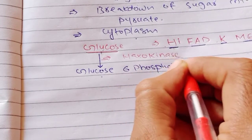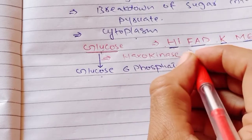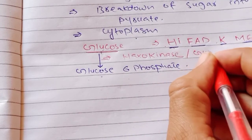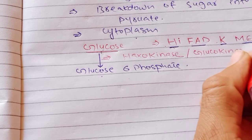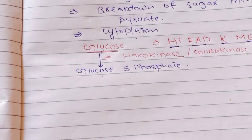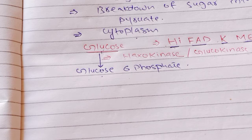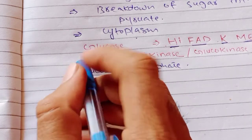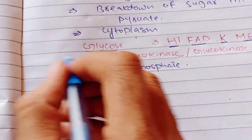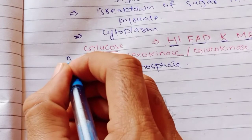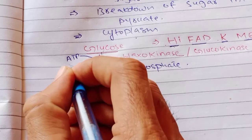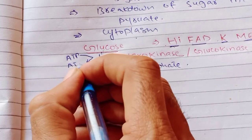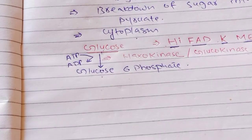Hexokinase is also called Glucokinase. Glucose is converted into glucose-6-phosphate, and this step utilizes ATP — ATP is converted into ADP. One phosphate is used here.